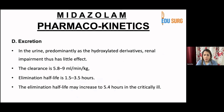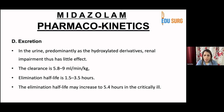Excretion is primarily in the urine as hydroxylated derivatives. Renal impairment has little effect, so it is a safer drug for patients with kidney disease or known CKD — you can use it within limited doses using ideal body weight. Clearance is 5.8 to 9 ml per minute per kilogram. Elimination half-life is 1.5 to 3.5 hours, and may increase in the critically ill.